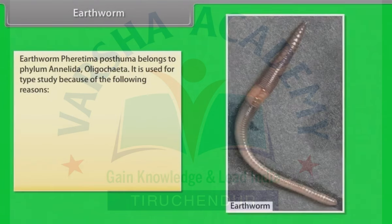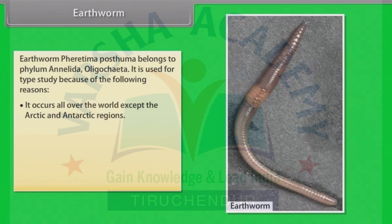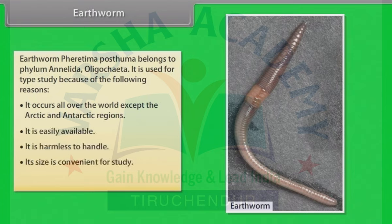Earthworm: Pheretima posthuma belongs to phylum Annelida, oligochaeta. It is used for type study because it occurs all over the world except the arctic and antarctic regions, it is easily available, it is harmless to handle, its size is convenient for study, and its morphology is well studied.